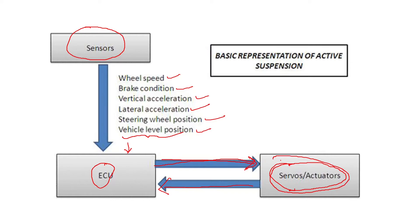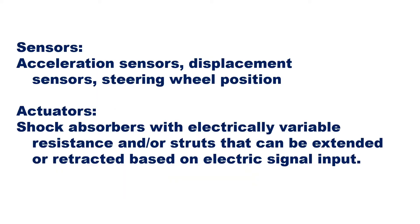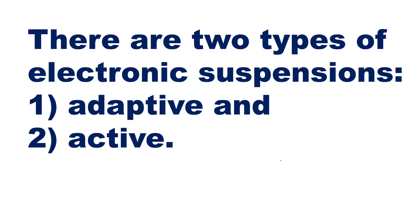This controls the suspension such that the person sitting inside the vehicle doesn't feel the pressure of bad road conditions. Sensors can be acceleration sensors, displacement sensors, or steering wheel sensors. All parameters you want to give to the ECU should first be sensed or converted into electrical signal and given to the ECU. Second, you have actuators — shock absorbers with electrically variable resistance and/or struts that can be extended or retracted based on electric signal input.